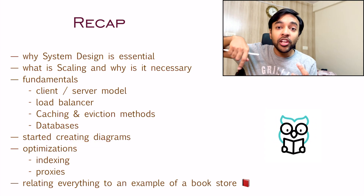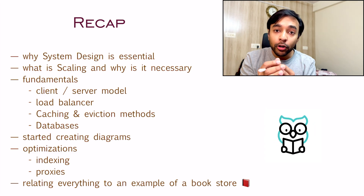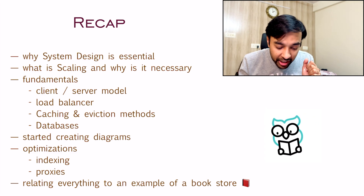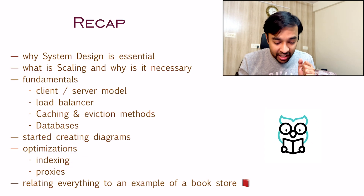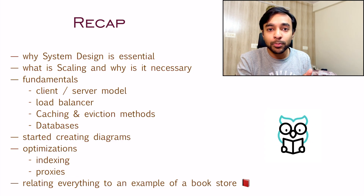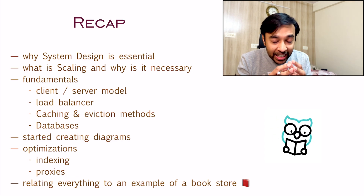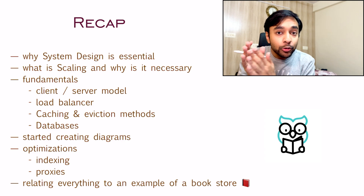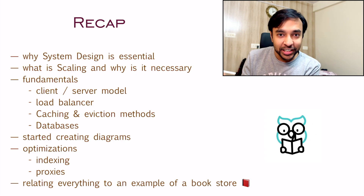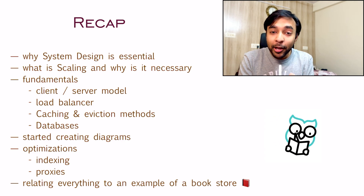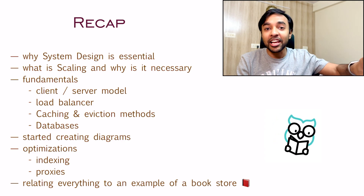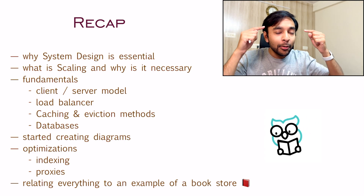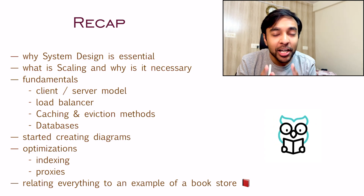Now we are moving into the part where we want to optimize our system, and that is where we are learning about indexing, about a forward proxy and a reverse proxy. We are able to understand all of this by using the example of a live bookstore, because that is something you see in real life — this way it will connect in your mind and you will remember it forever.